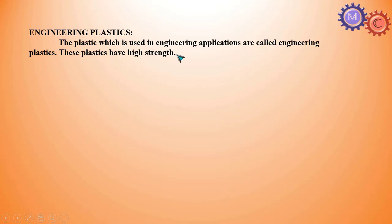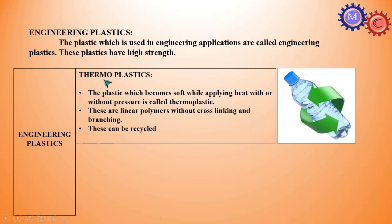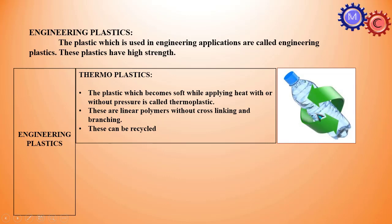The first type is thermoplastics. The plastic which becomes soft while applying heat, with or without pressure, is called thermoplastics. These are linear polymers without cross-linking and branching — a linear chemical structure. These can be recycled; for example, a water bottle.